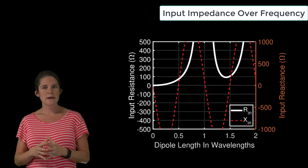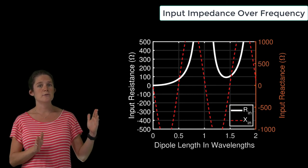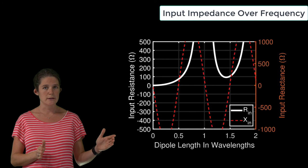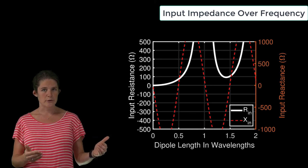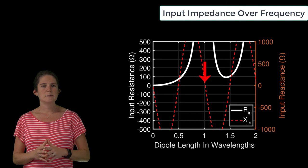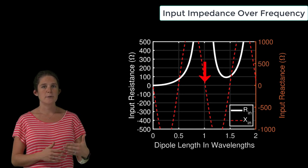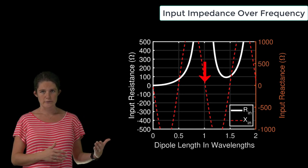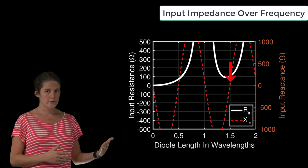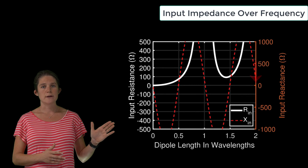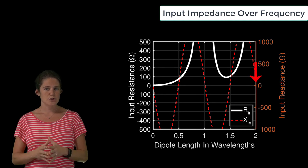If we expand our x-axis to go all the way up to the frequency at which the antenna length is two wavelengths, which is four times the design frequency of a half-wave dipole, you can see that the antenna experiences a second resonance at approximately L equals one wavelength, a third resonance at approximately L equals one and a half wavelengths, and a fourth resonance at approximately L equals two wavelengths.